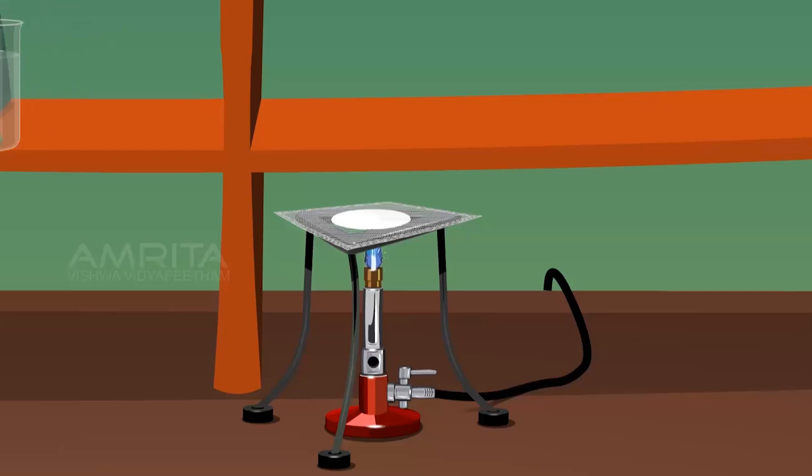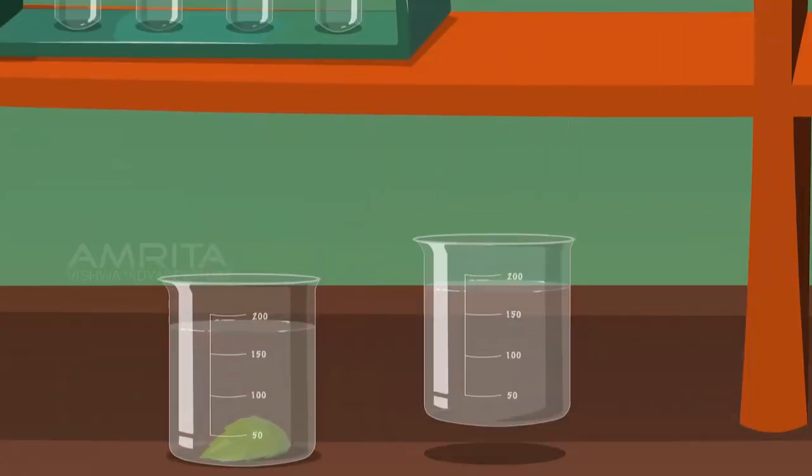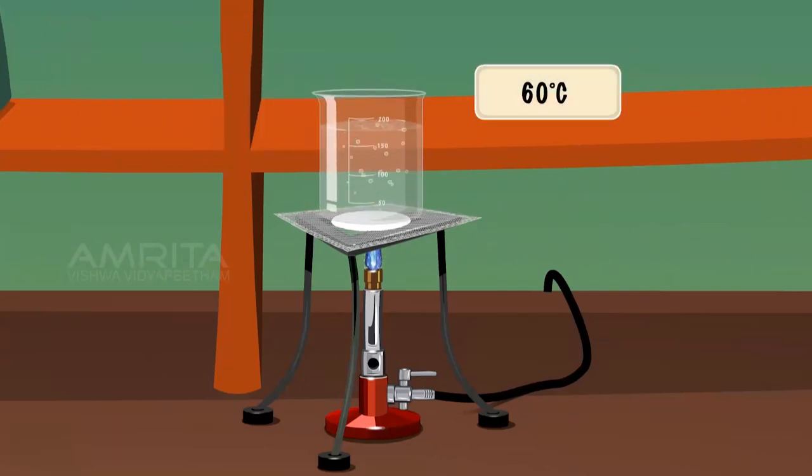Remove the beaker from the tripod stand and allow it to cool for some time. Take another beaker containing distilled water and place it over a Bunsen burner and boil it to about 60 degrees.